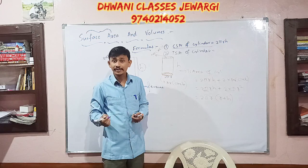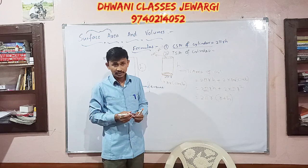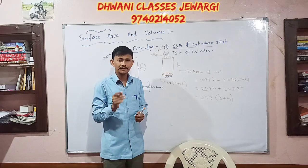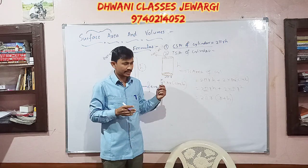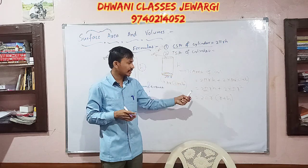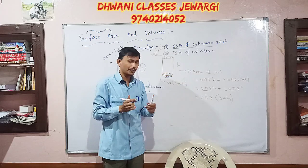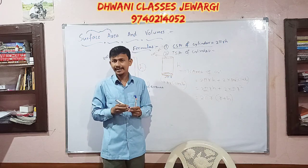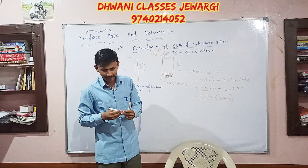TSA of what? Cylinder. Total surface area of cylinder = 2πr(r + h).